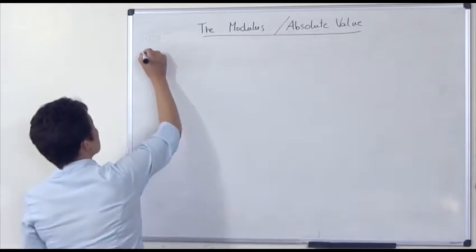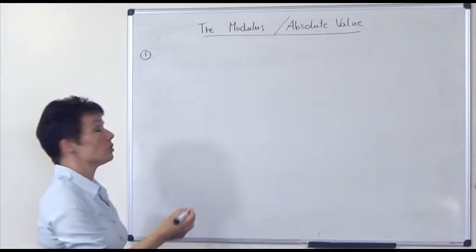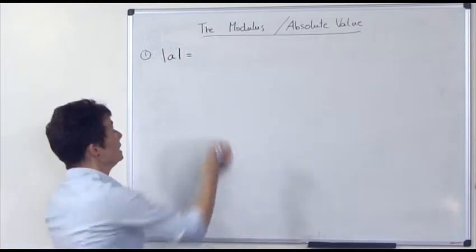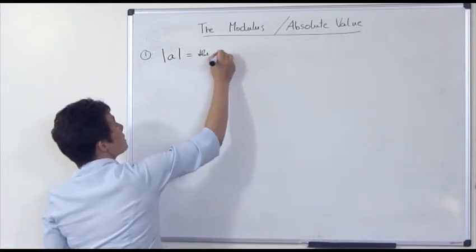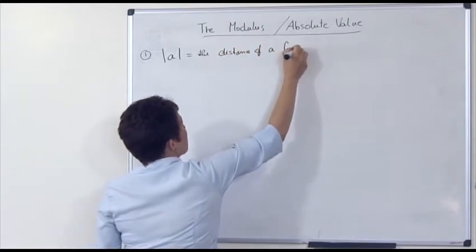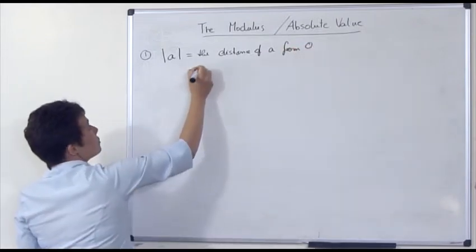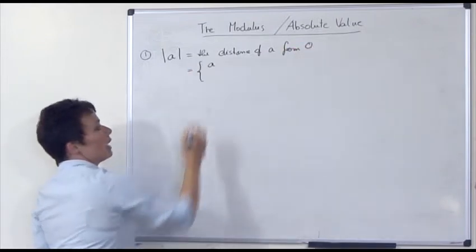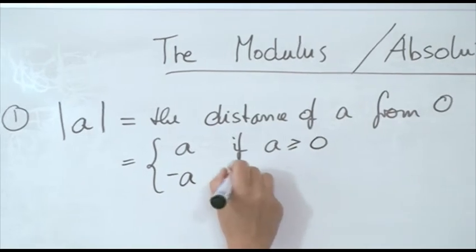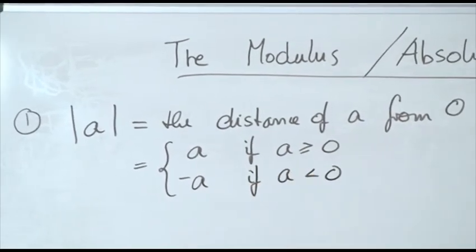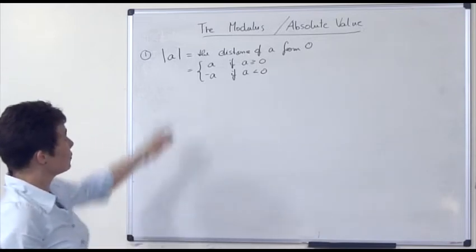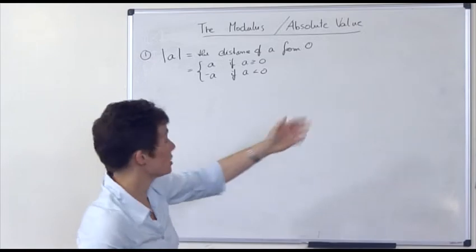So the first remark is really just the definition. The modulus of a number a can be thought of as the distance of a from the origin, from zero. This is equal to a if a is non-negative, and it's negative a if a is negative, because if a is negative, then minus a is positive. So thinking about the modulus as the distance from zero can sometimes be useful.